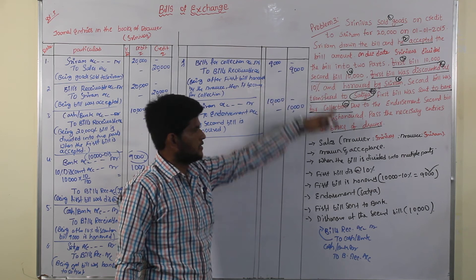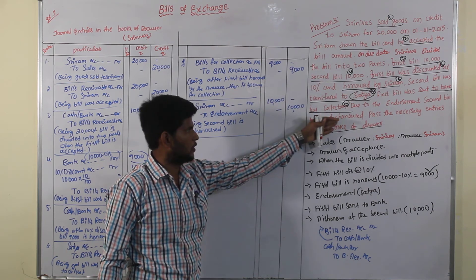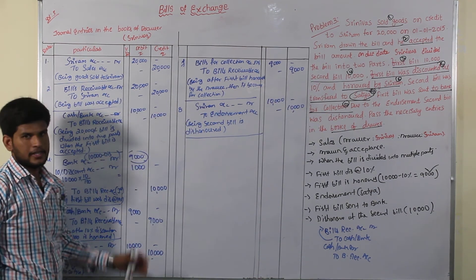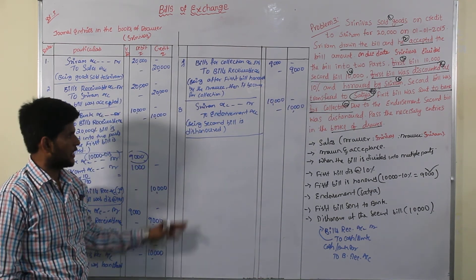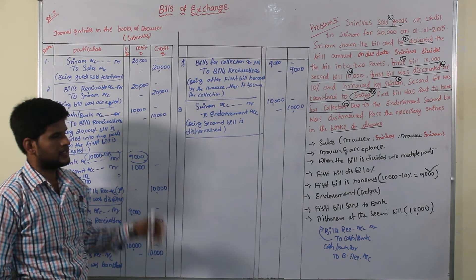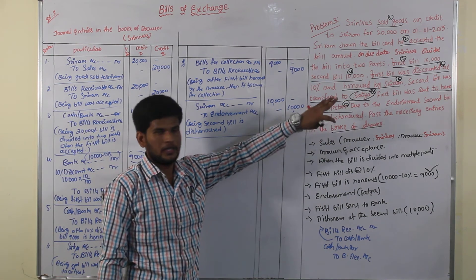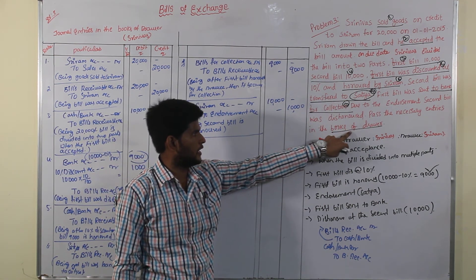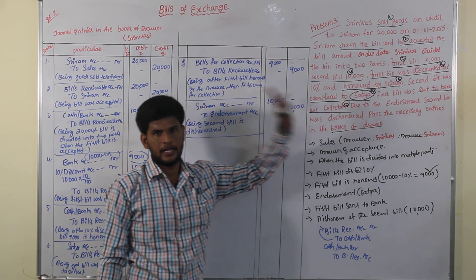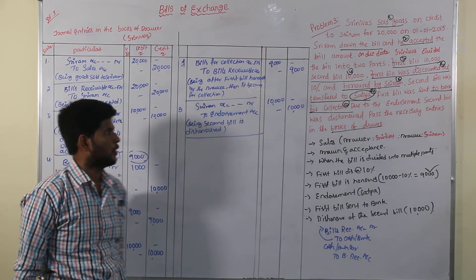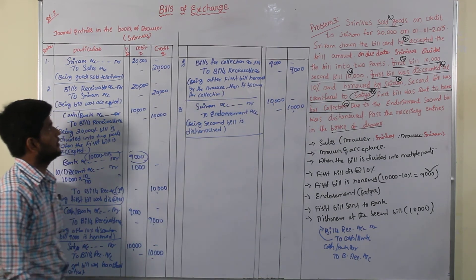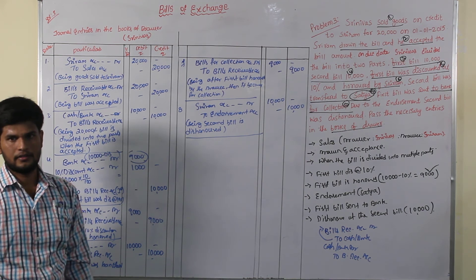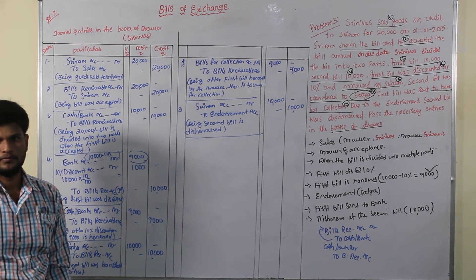These are the entries based on this problem. We have completed the entries in the books of the drawer. The problem is only to enter the entries in the books of the drawer. This covers all mandatory entries. Thanks for listening.